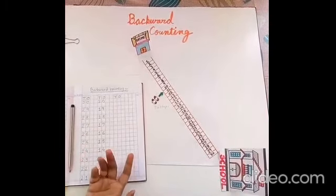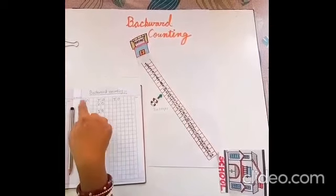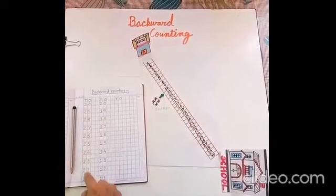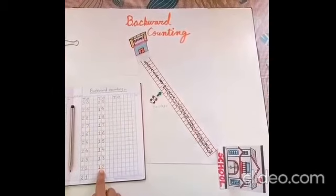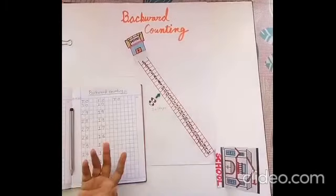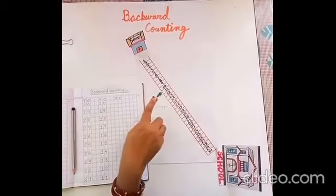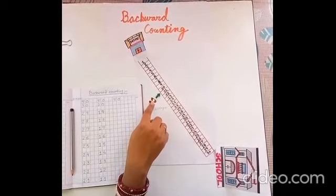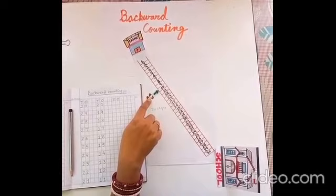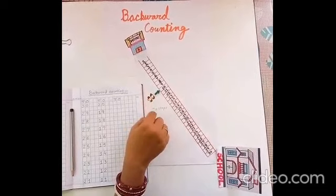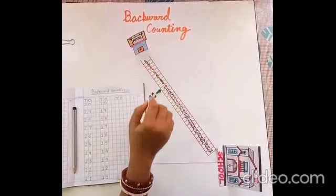Remember children, in backward counting we always write bigger number to smaller number. Children, what is the next step towards your home? Very good. Step number 10. Wow! Only 10 steps are remaining towards your home.